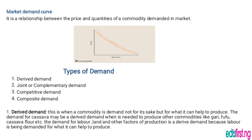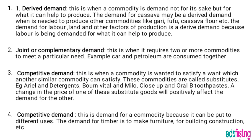Derived demand: this is when a commodity is demanded not for its own sake, but for what it can help to produce. The demand for cassava may be a derived demand when it is needed to produce other commodities like garri, fufu, cassava flour, etc. The demand for labor, land, and other factors of production is also a derived demand because labor is demanded for what it is able to produce.